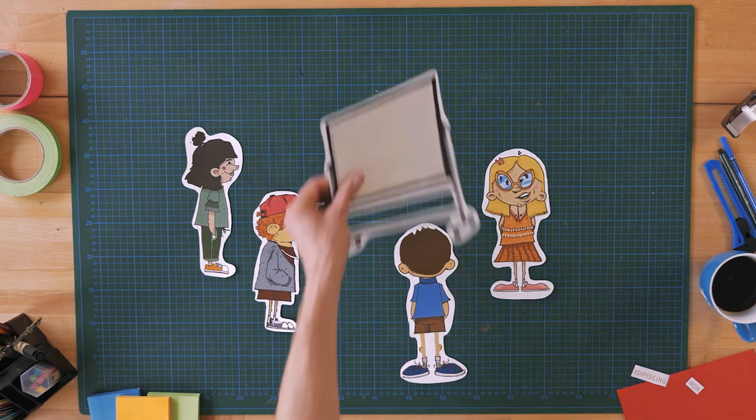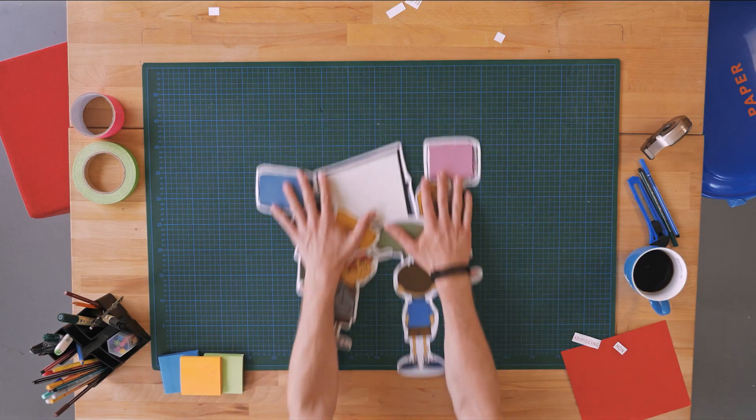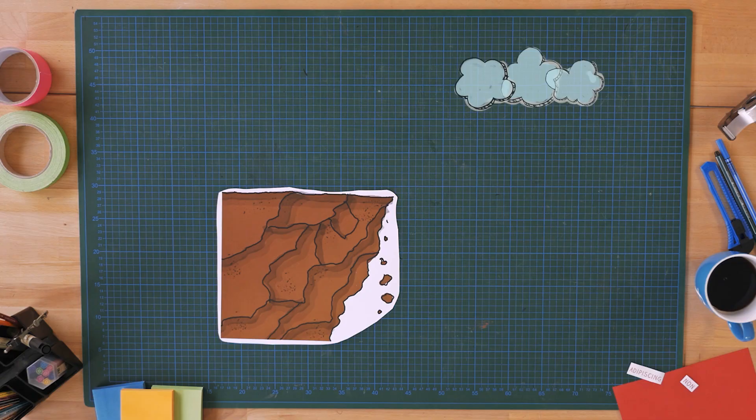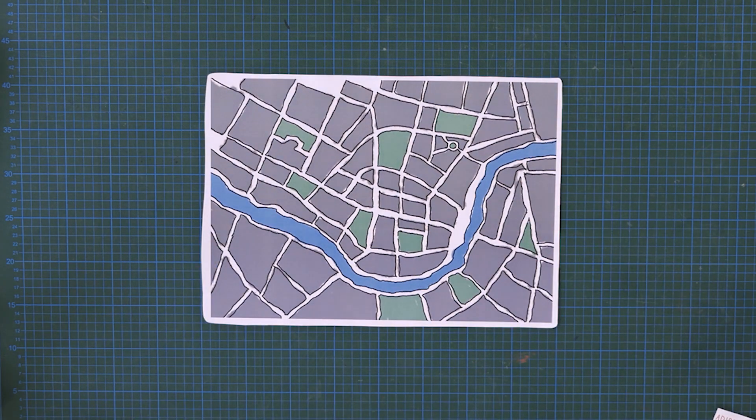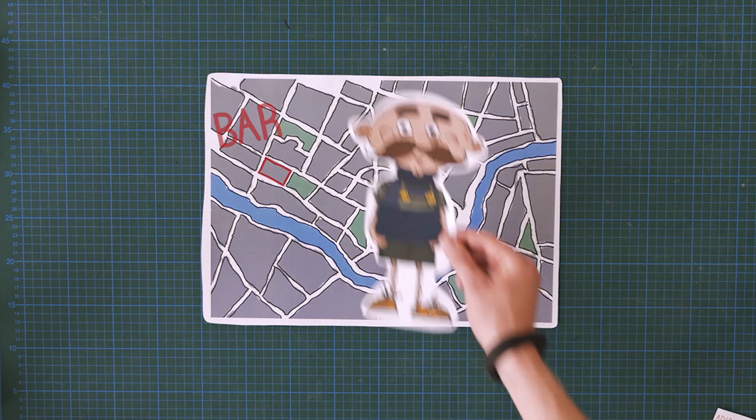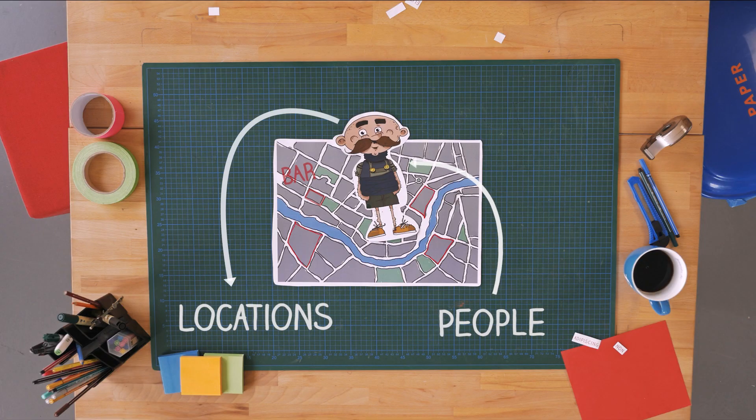For example the team is brainstorming stakeholders but they encounter a dead-end and run out of ideas. Then someone begins talking about something at the locations they've been. For example at a bar and how they talk to the bar owner. This makes the conversational focus shift from people who are the stakeholders to locations.